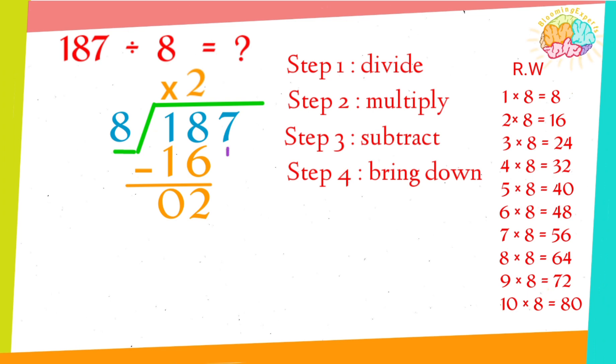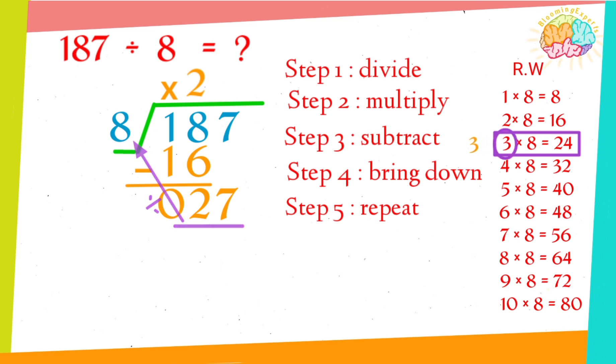Step 5: Repeat. Step 1, divide again. Divide the number now 27 by 8. With the help of 8 times table, we find 24 is the nearest number to 27.